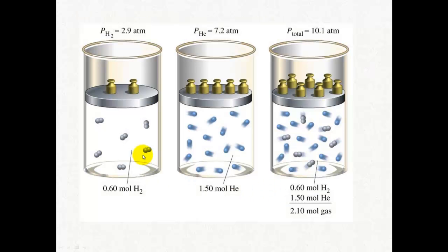So it's as simple as this. There's 0.6 mol of hydrogen here. Hydrogen contributes 2.9 atmospheres of pressure. Here we've got 1.5 mol of helium. The amount doesn't matter. The pressure matters. So it's 7.2 atmospheres plus 2.9 atmospheres so you get a total pressure of 10.1 atmospheres.